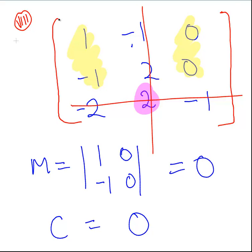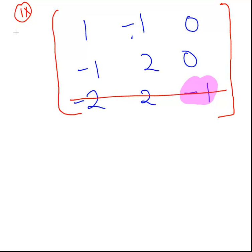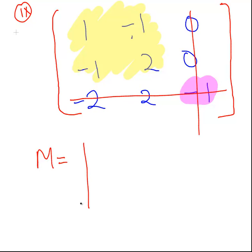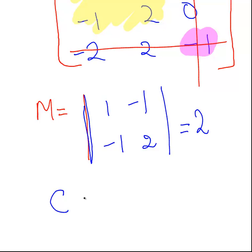That previous element was in a negative position in the sign array. And finally, the last element. Cross off the row, cross off the column. The minor is the determinant of 1, minus 1, minus 1, and 2. That works out to be 2. We are in a plus position in the sign array, so the cofactor is plus 1 times 2, which is also equal to 2. Brilliant — that's it all done.